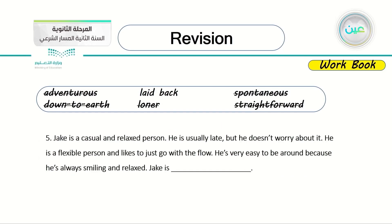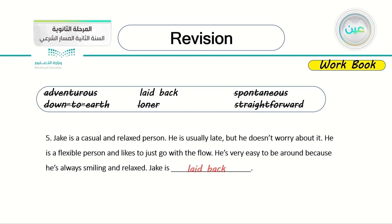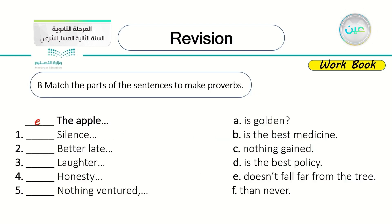The last one: Jake is a casual and relaxed person. He's usually late but he doesn't worry about it. He is a flexible person and likes to just go with the flow. He's very easy to be around because he's always smiling and relaxed. So Jake is laid back. Now we are finished with this exercise.